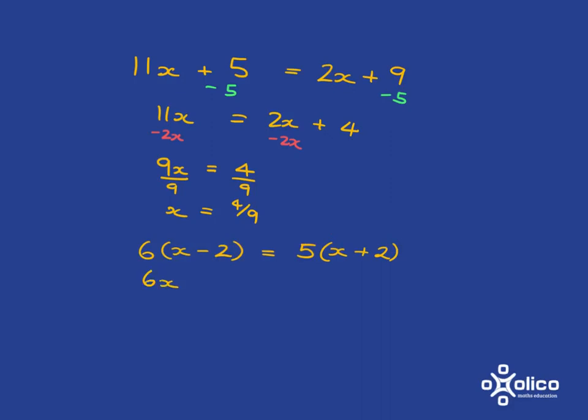So the 6 must multiply with the x and also with the negative 2, and the 5 must multiply with the x and with the 2. Now we're in the same situation as before.